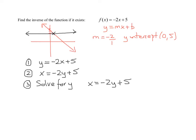And the first thing I better do is subtract 5 from both sides. So I get x minus 5 equals negative 2y. And the last thing I have to do is divide both sides by negative 2.